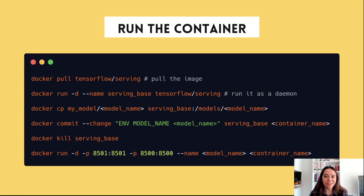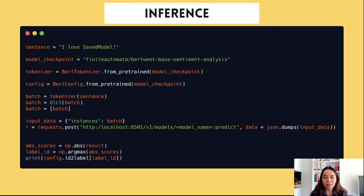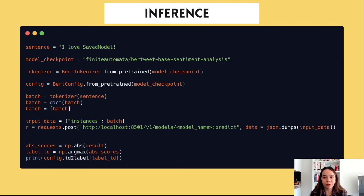First we pull the Docker image for TensorFlow Serving and run it. Then we create a new image by committing the container. We publish the container's port where TensorFlow Serving handles REST API requests to the host port and run it. For inference, we call the tokenizer of the model to process our data and send a request to the endpoint. We get the JSON output and take the output with the highest score using argmax. The labels are 0 for negative sentiment and 1 for positive sentiment, so we map it using the ID-to-label mapping from the config file in Hugging Face, and we get the positive label as the sentiment of our output.